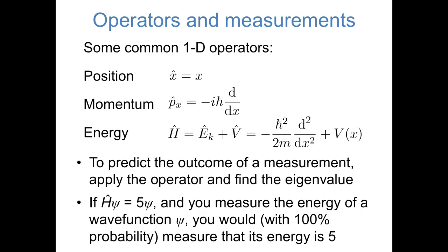For example, if we apply the Hamiltonian operator to a wave function psi, and the result is 5 times the original wave function psi, what that tells us is that if we were to take a measurement of the energy of an object in wave function psi, then we would, 100% of the time, measure that the energy of that object is 5. The measured value of that property is equal to the eigenvalue of the operator that corresponds to that property.